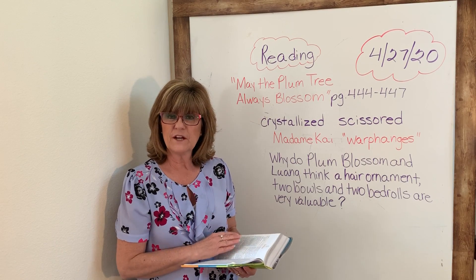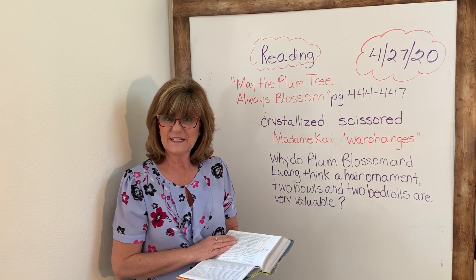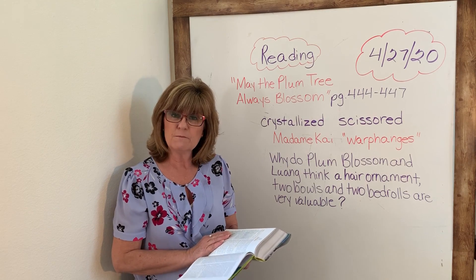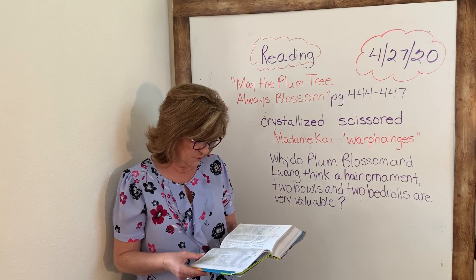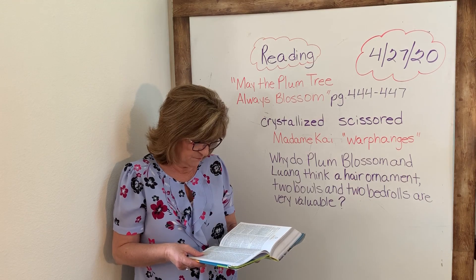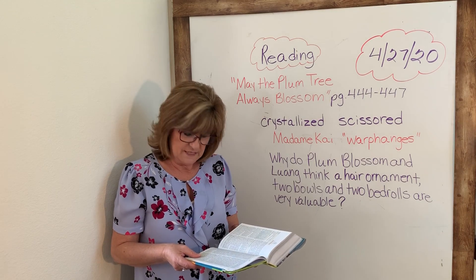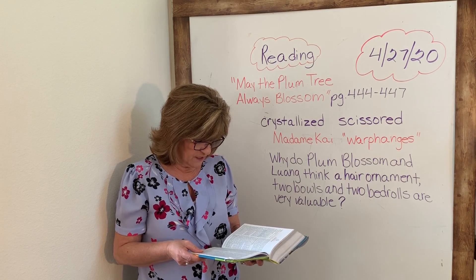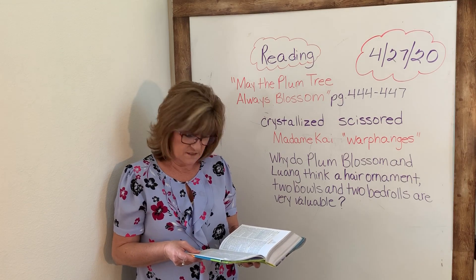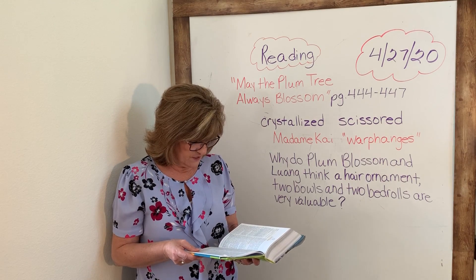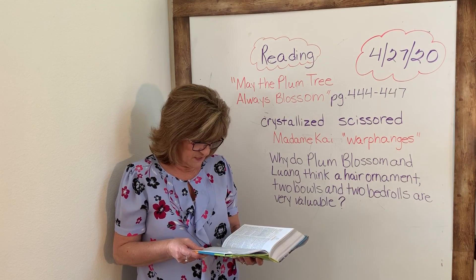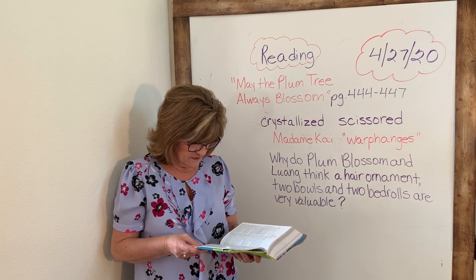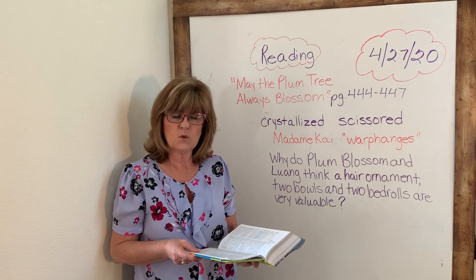Before we get into the story, there's a verse that I'd like to share with you. This verse is from James chapter 1, verse 27. It says, religion that is pure and undefiled before God the Father is this: to visit orphans and widows in their affliction and to keep oneself unstained from the world.